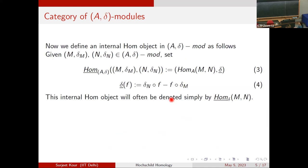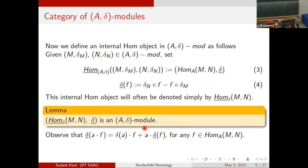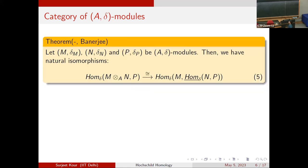We now define an internal hom object in the category. Given two objects (M, delta_M) and (N, delta_N) in A-delta-mod, the internal hom is Hom_A(M,N) from the module category, with a map delta-bar defined by: delta-bar(f) = delta_N ∘ f − f ∘ delta_M. This object is denoted Hom_delta(M,N) and is an A-delta module. It is the right adjoint to the tensor product, making A-delta-mod a closed symmetric monoidal category.